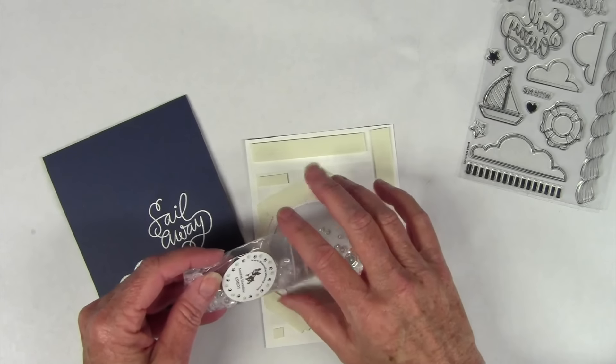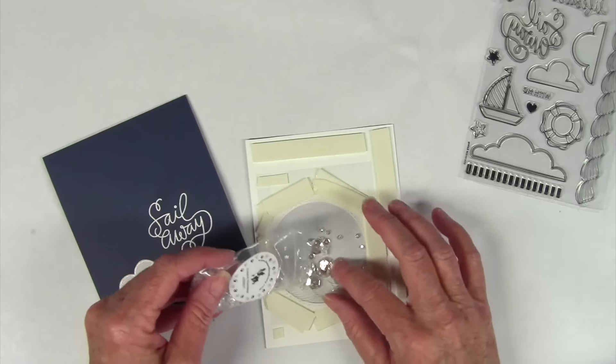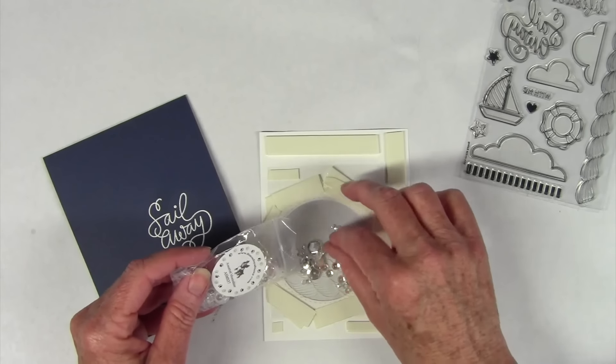Once I have that ready I can pour my sequins in and I'm using the Simon Says Stamp moonshine sequins.